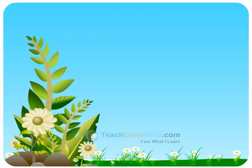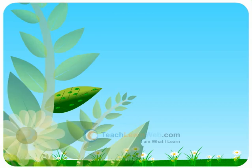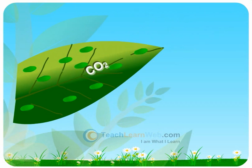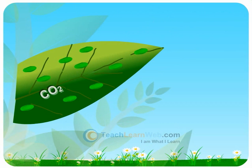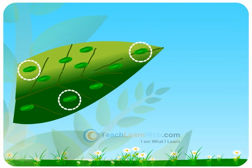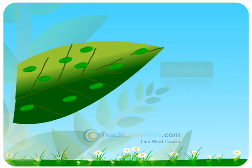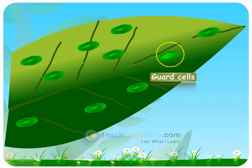Carbon dioxide is taken from air through small pores on the leaf. These small pores are called stomata. They are opened and closed by guard cells.